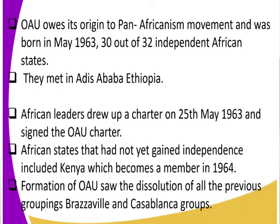African states that had not yet gained independence were not founding members. For example, Kenya, which gained independence later, became a member in 1964. So immediately after Kenya gained independence, it joined the OAU. From this origin, we understand that only independent states joined the OAU.